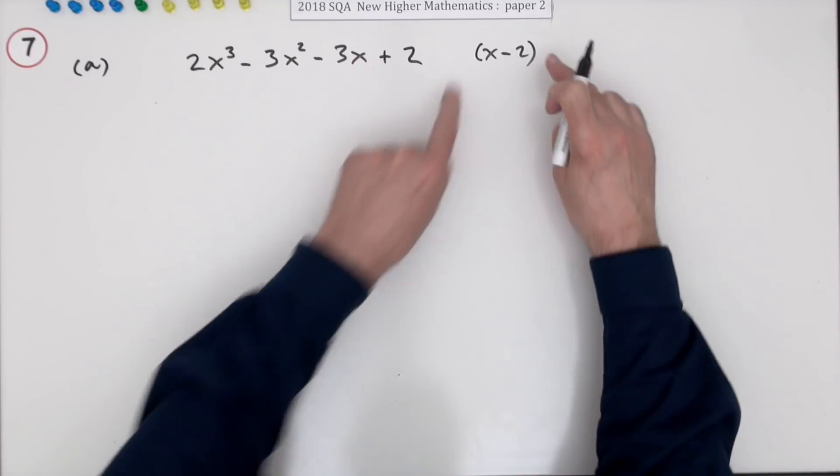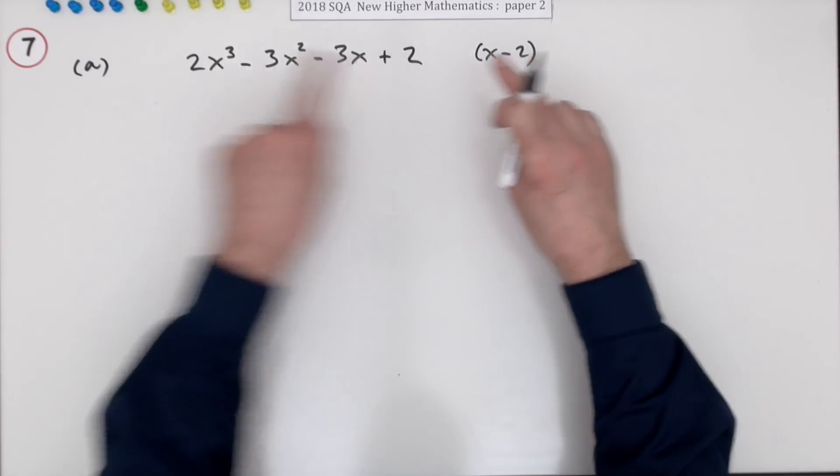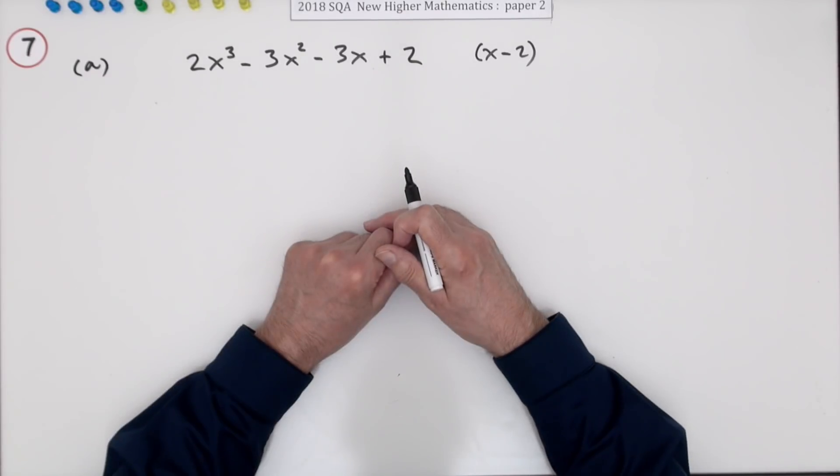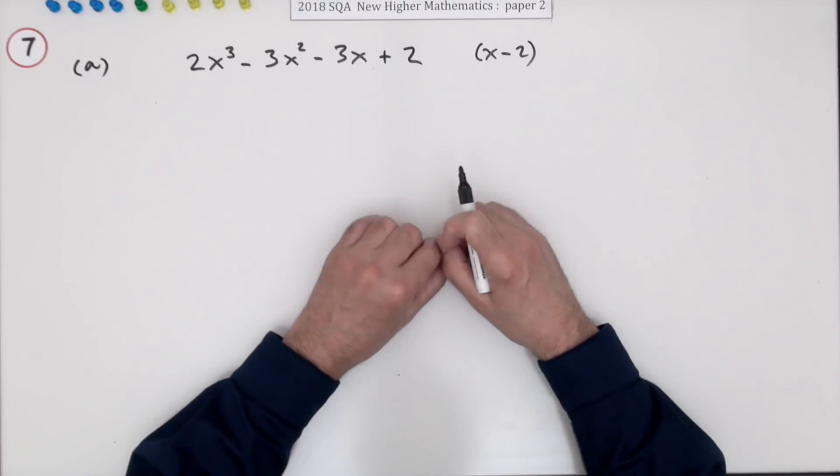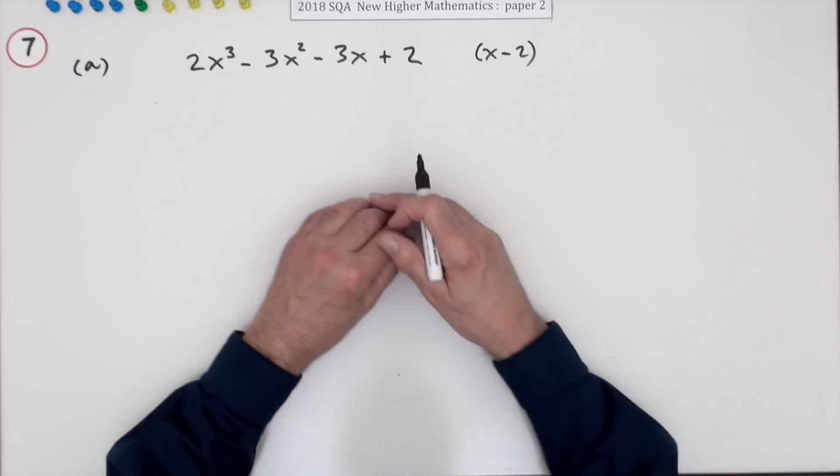Well there's two ways of going about showing that that might be a factor of that. One way is just to divide it into it and see that it divides exactly so the remainder is zero. And there are two ways of doing that. There's the real division which I'm not going to do this time or the synthetic division.